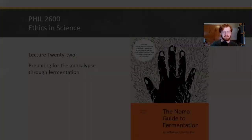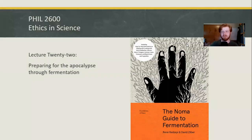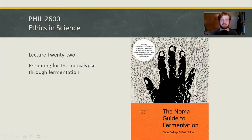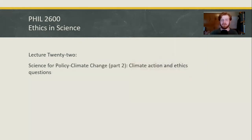So what are we talking about today? We are, of course, talking about — and this is Lecture 22 — Preparing for the Apocalypse Through Fermentation. Here's our course textbook, The NOMA Guide to Fermentation. I'm back to doing the weird jokes at the beginning. What are we talking about today? This is Science for Policy, Climate Change, Part 2: Climate Action and Ethics Questions.